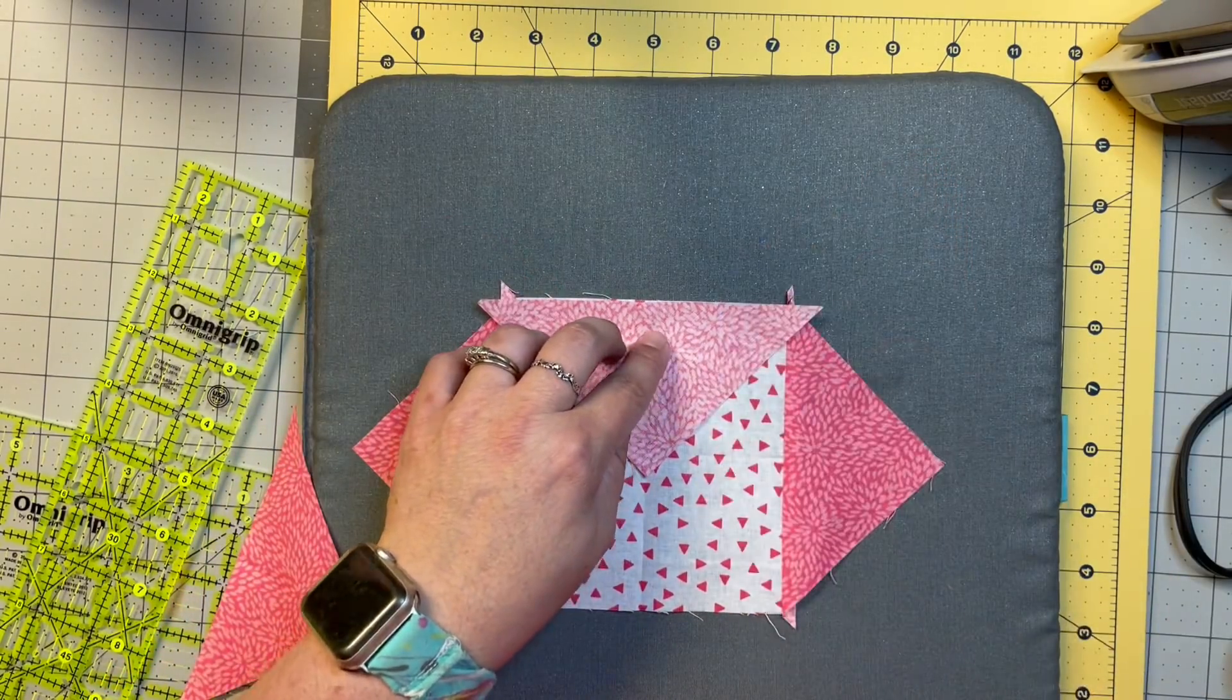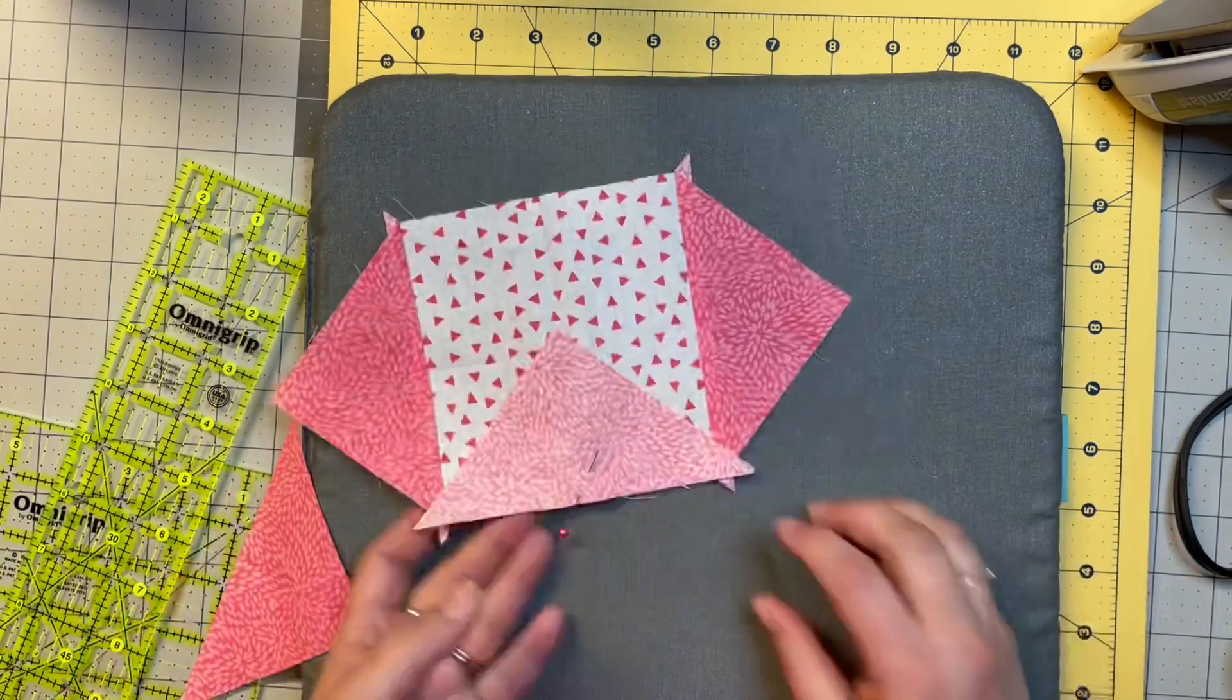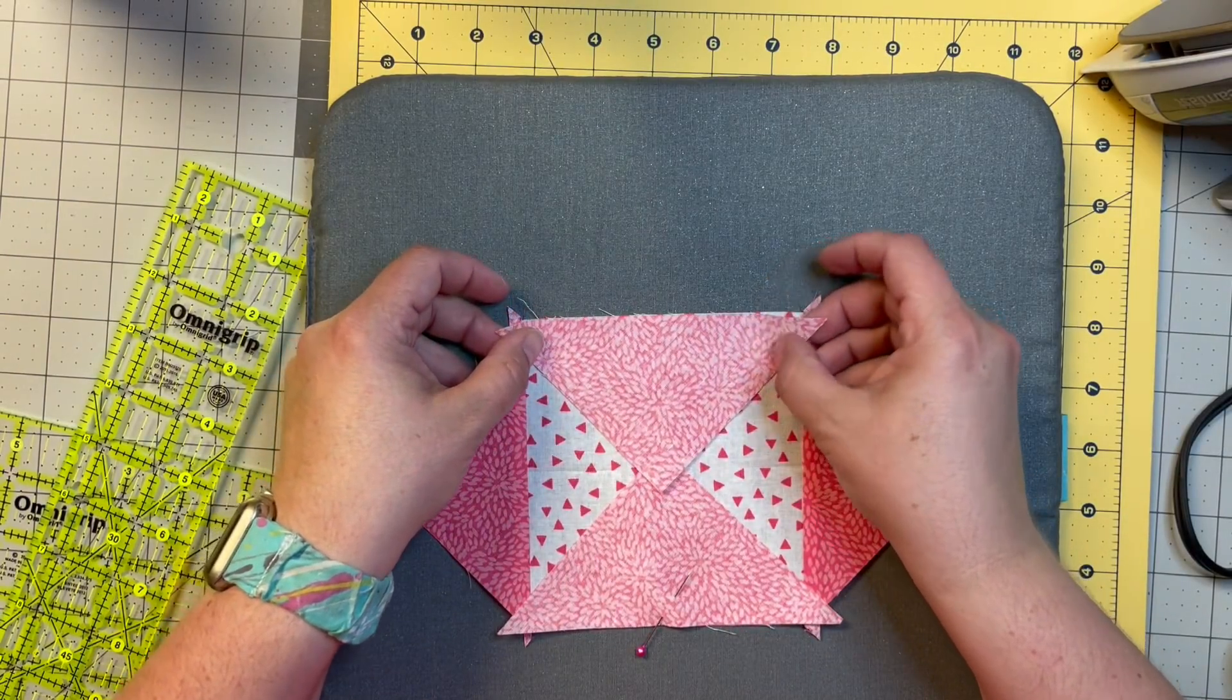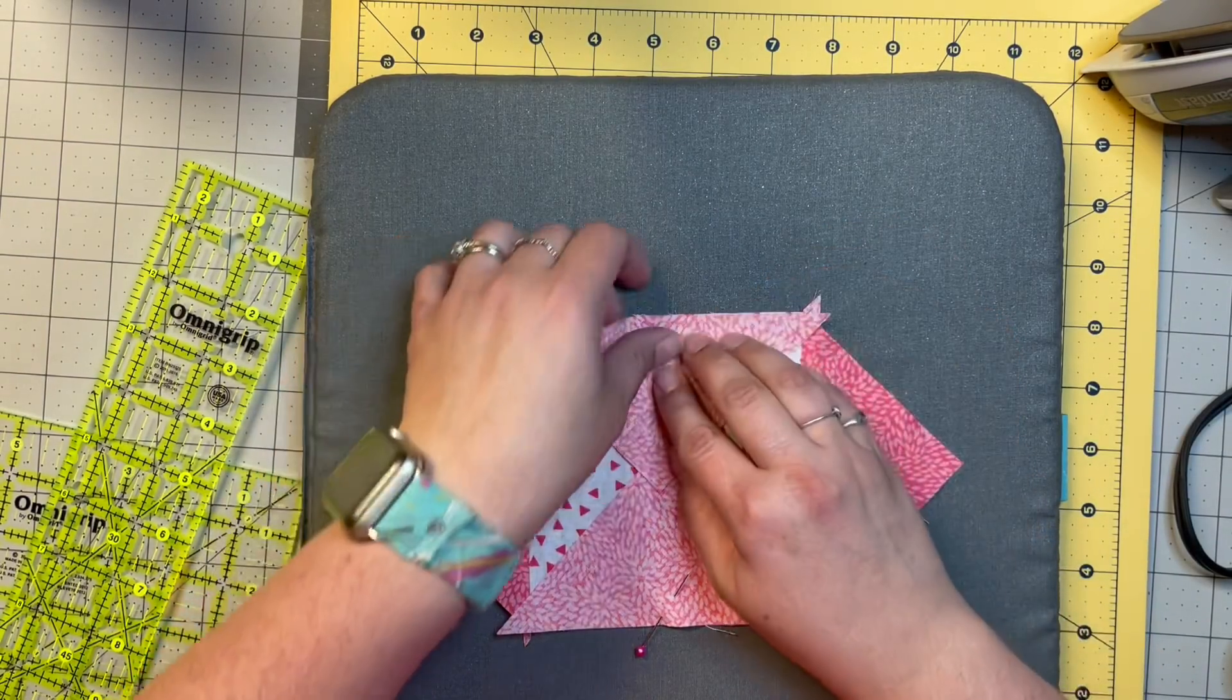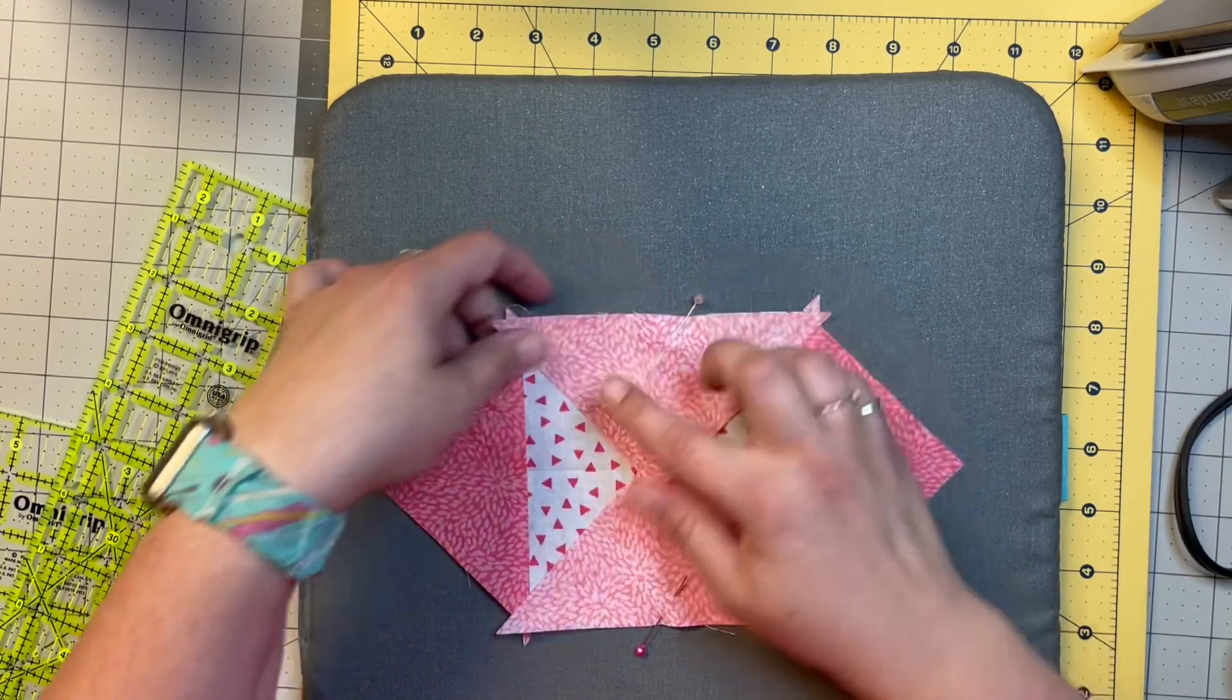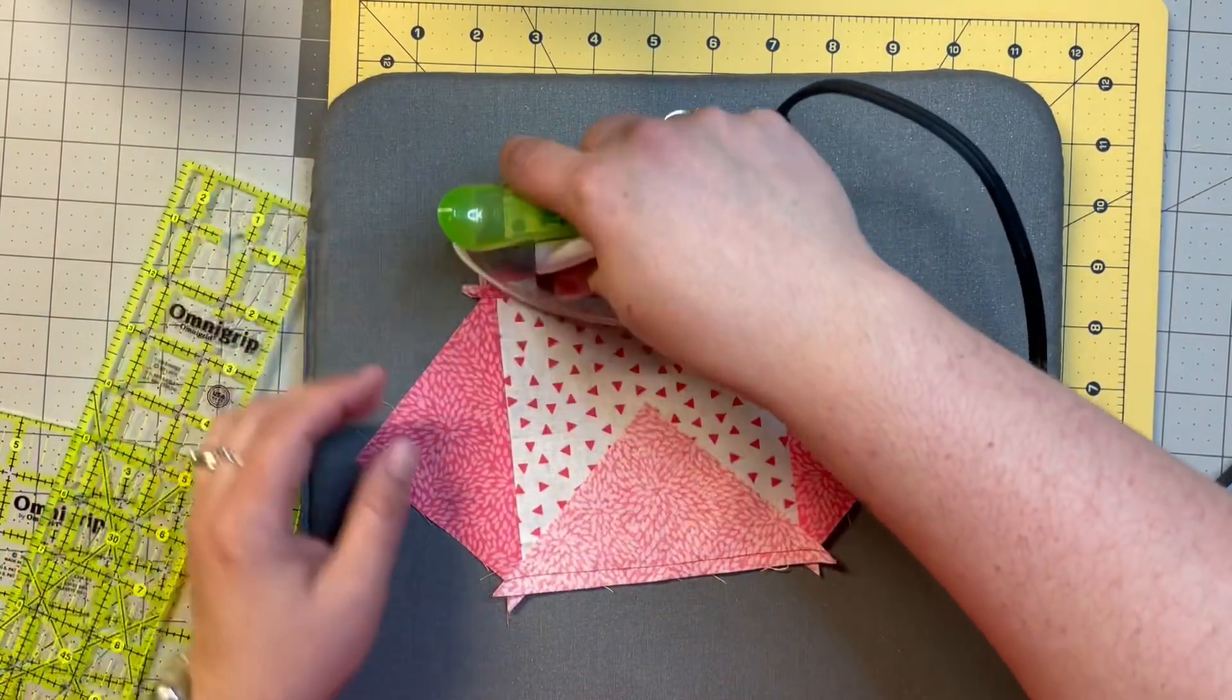Then you're just going to line those middle pieces up again—the creases in the middle there. Flip it around and do the same. Then we're going to sew down those. Okay, we've sewn that up. Now you'll have a nice little square here.